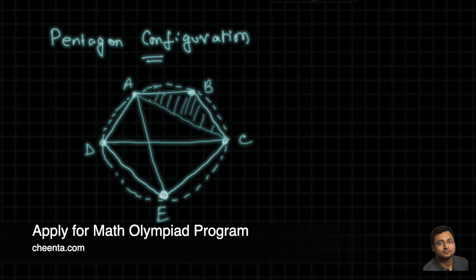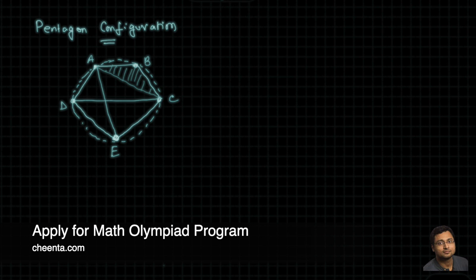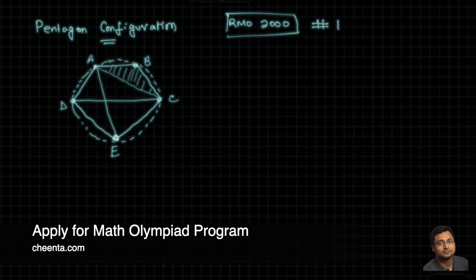So this is the pentagon configuration. You might have seen it in other problems. We will discuss a particular problem where this configuration comes up. This is from RMO 2000 problem number one. We solved it earlier using trig bashing. This time we will do it by pure geometry.